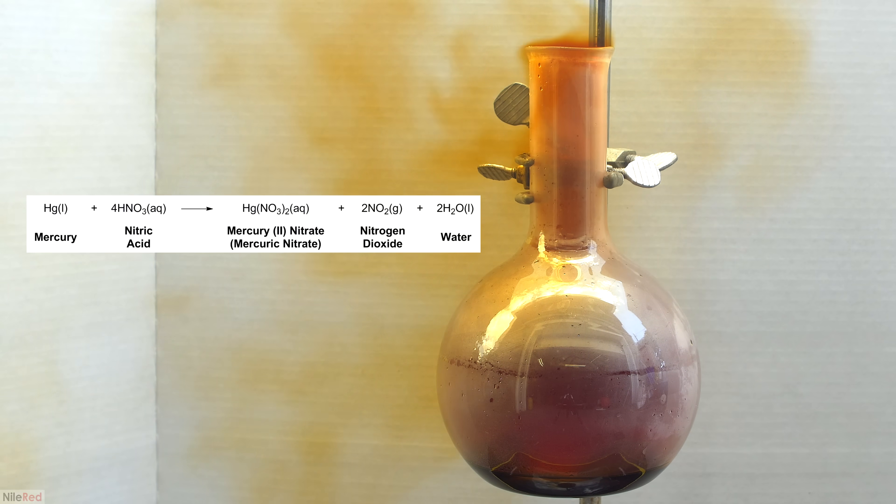The reaction that we're carrying out is shown on the left, where the mercury reacts with concentrated nitric acid to form mercury(II) nitrate. The reason why we start by reacting mercury with nitric acid is because nitric acid is a very good way to convert metals to their respective salts.